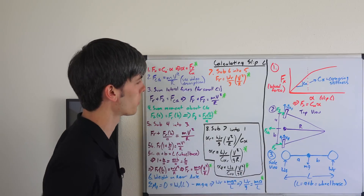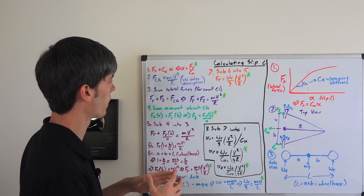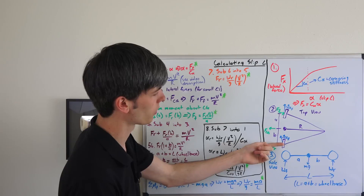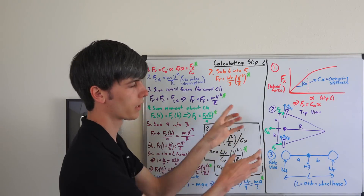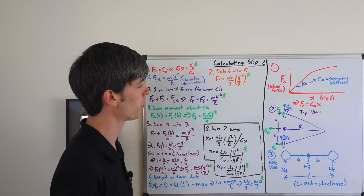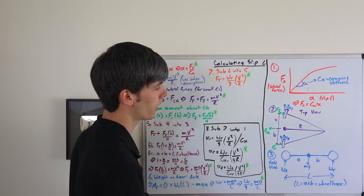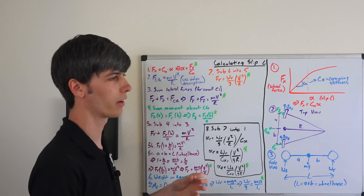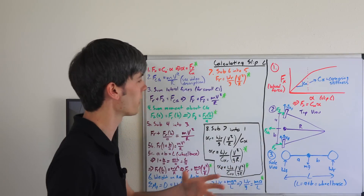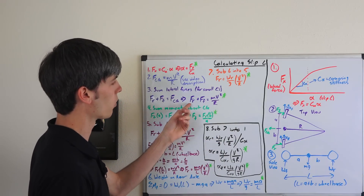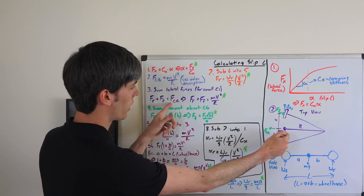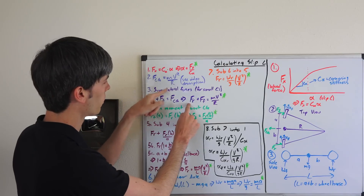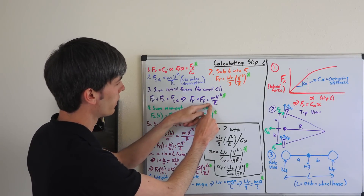If we sum the lateral forces on the bicycle model for small angles, the force on the front tire plus the force on the rear tire equals the centripetal force at the center of gravity. The reason we specify small angles is that the tire forces aren't exactly perpendicular to the centripetal force — there's an angle — but for small angles, the cosine of that angle is approximately 1. Substituting in, the force on the rear plus the force on the front equals mv²/r.